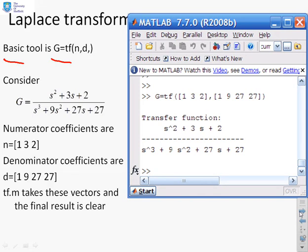So taking what we've just looked at on polynomials, you'll see that the numerator coefficients, when the numerator is this s^2 plus 3s plus 2, are 1, 3 and 2. So I can write n equals 1, 3, 2. The denominator coefficients are 1, 9, 27 and 27, so you'll see I've written d equals 1, 9, 27, 27.